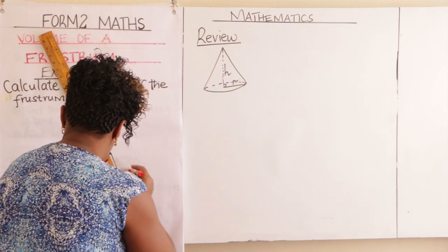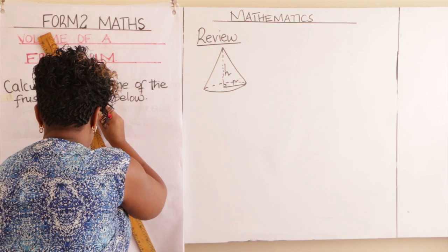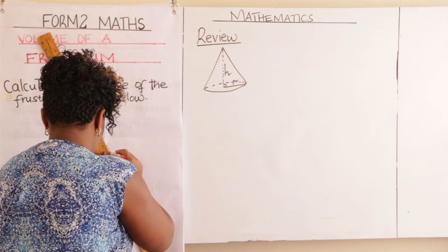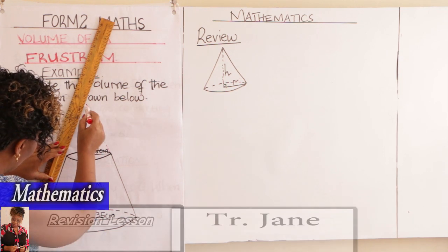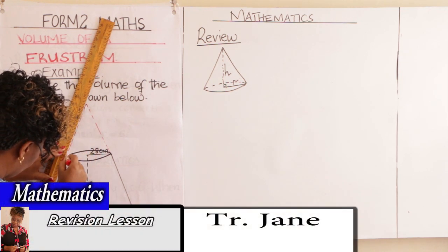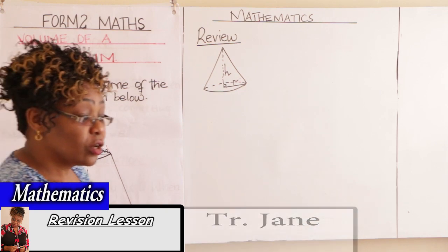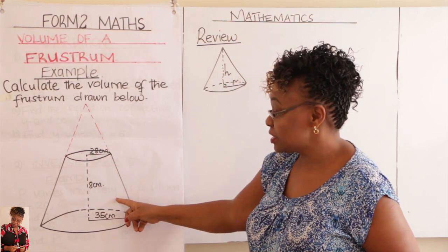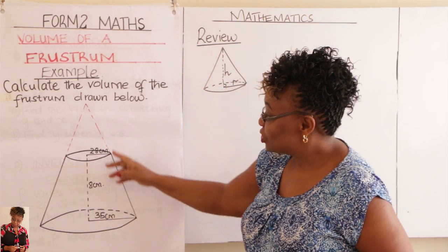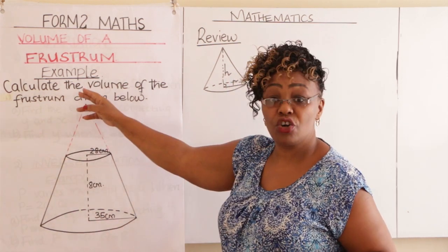These lines here, you produce them, you can produce them with a ruler like that. We also produce this other one like that so that we get the original cone from which the frustum was obtained. So this is now the original cone.